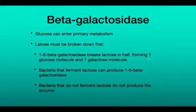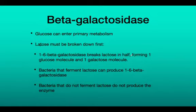Beta-galactosidase is the enzyme produced by lactose fermenters. In order for glucose to enter into primary metabolism when lactose is present, lactose has to first be broken down. This 1,6 and 1,4 beta-galactosidase will break lactose in half, producing one glucose and one galactose molecule. Bacteria that can ferment lactose can produce the beta-galactosidase enzyme; bacteria that do not ferment lactose are incapable of producing that enzyme.